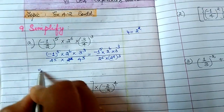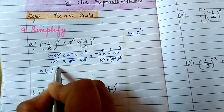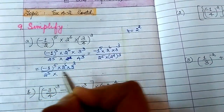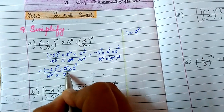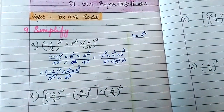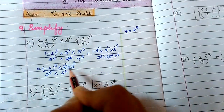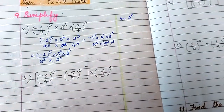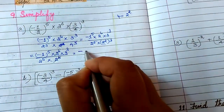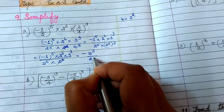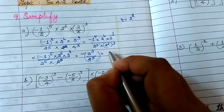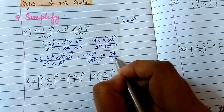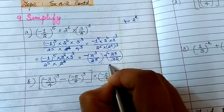What is 2 square whole cube? It is 2 to the power 3 into 2, which is 2 to the power 6. So we can cancel out 2 to the power 6 and 2 to the power 6. Minus to the power of an even number gives plus, so we get minus 3 cube upon 2 to the power 5. 3 cube is 27, 2 to the power 5 is 32, and there is a minus sign. So the result is minus 27 upon 32.